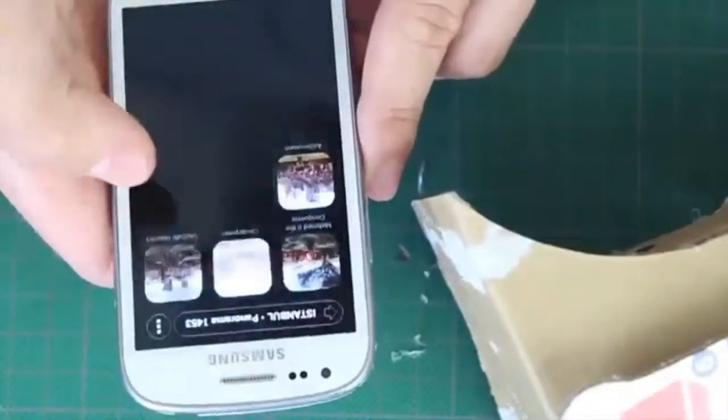Before testing out our goggles, we need to open the Play Store and install an app called Google Cardboard and any other mobile VR app. You can simply type VR into your search box and find lots of interesting apps.